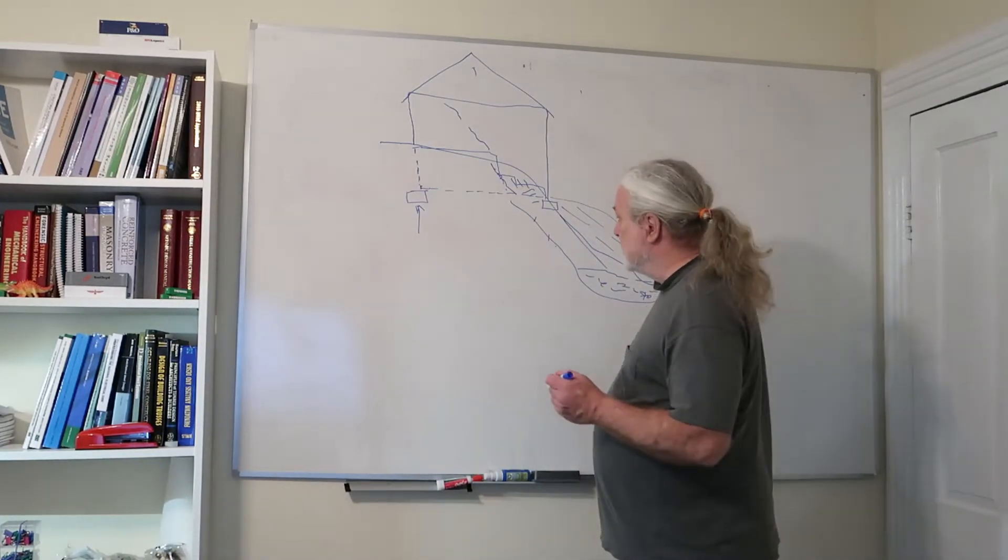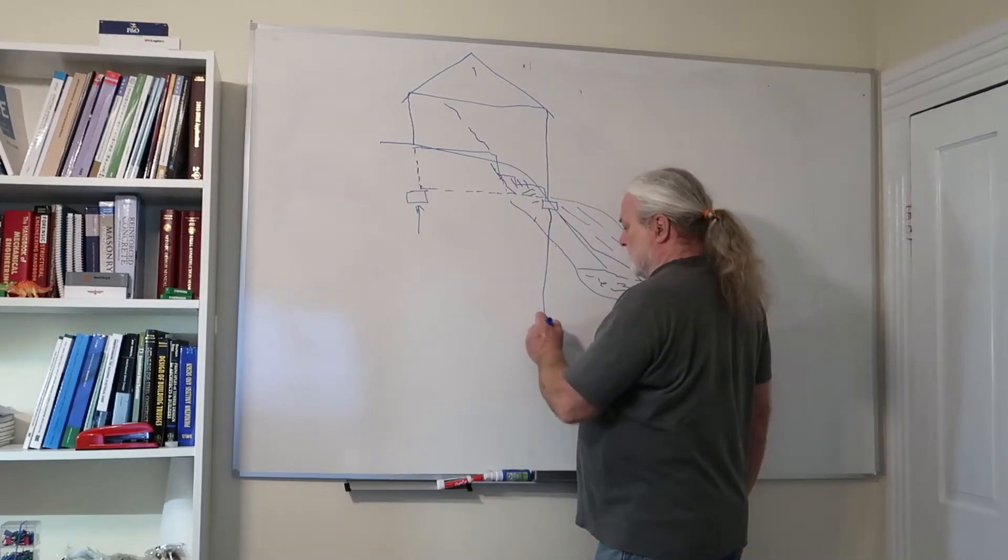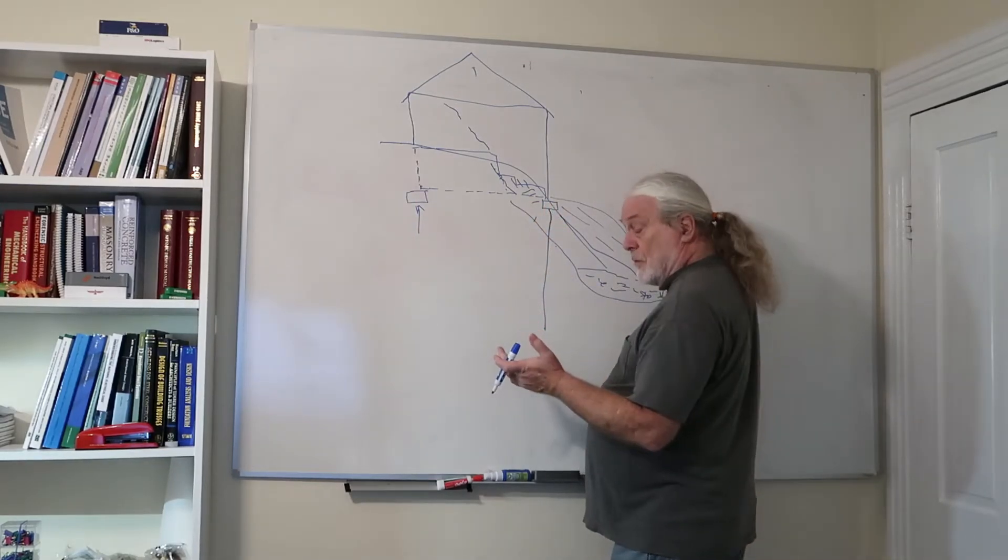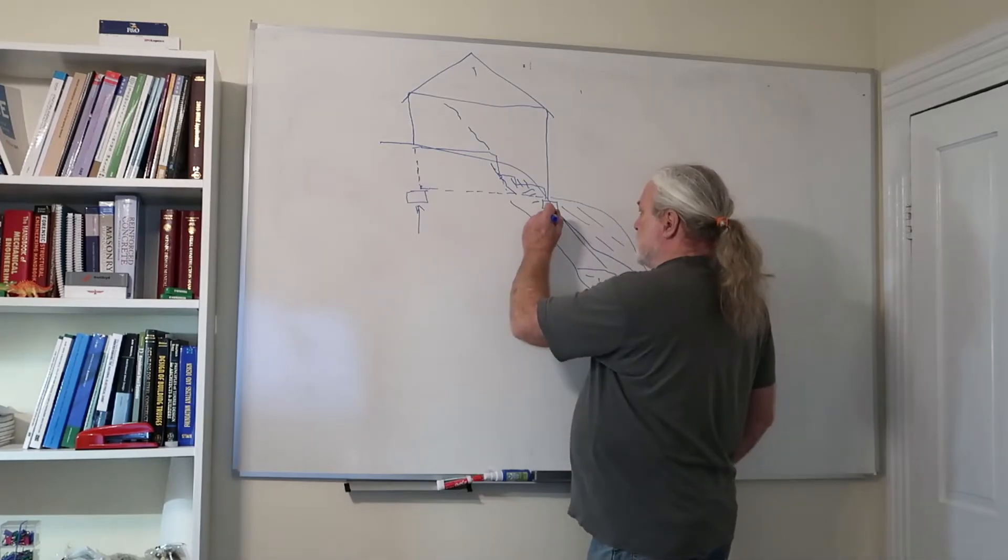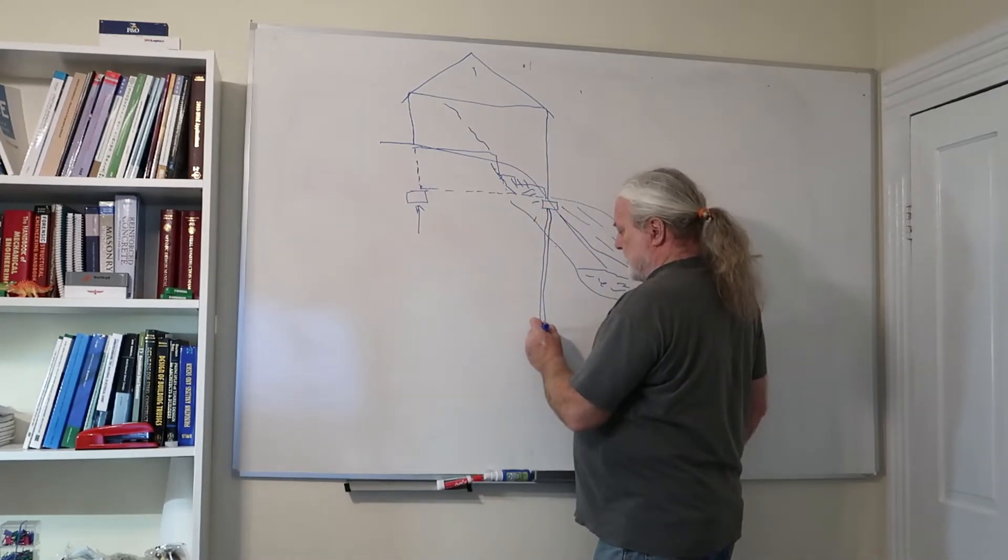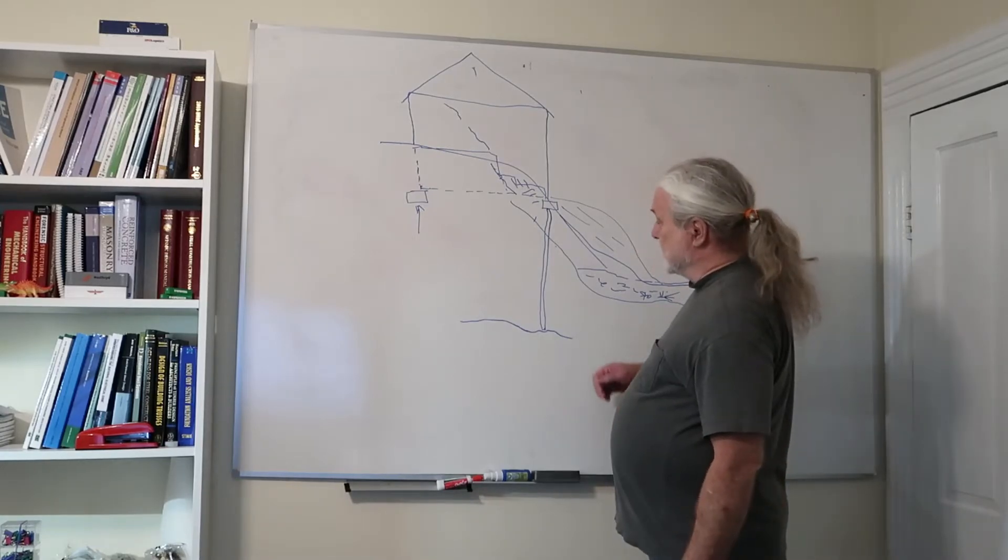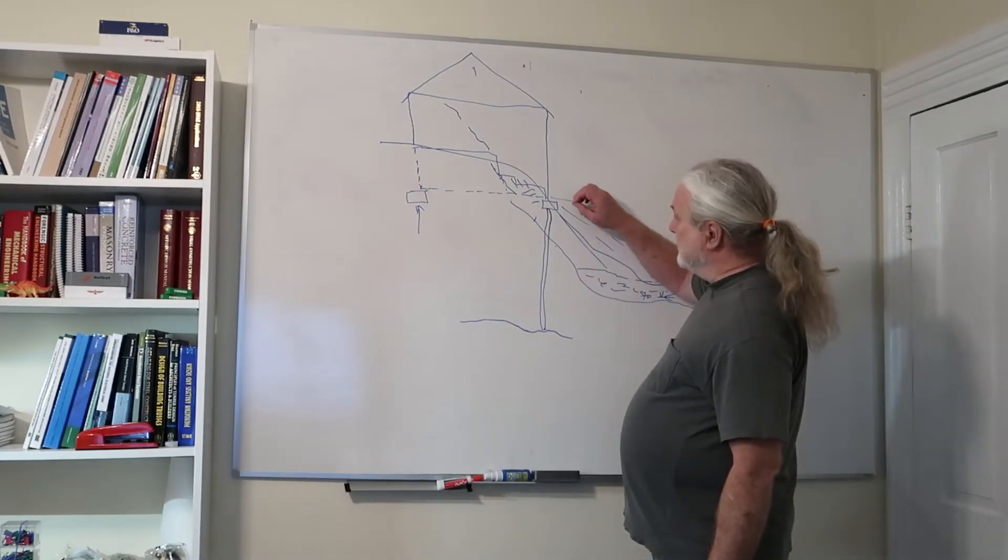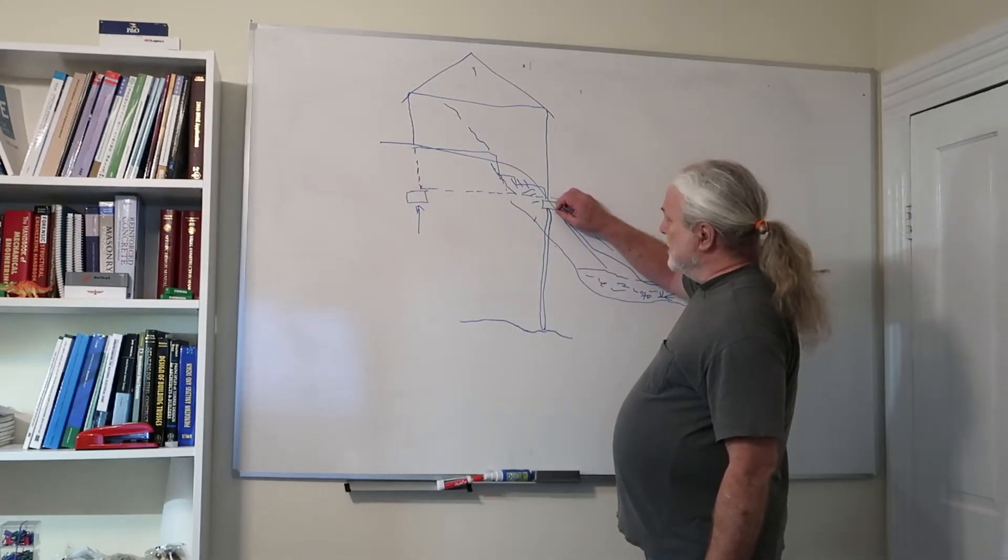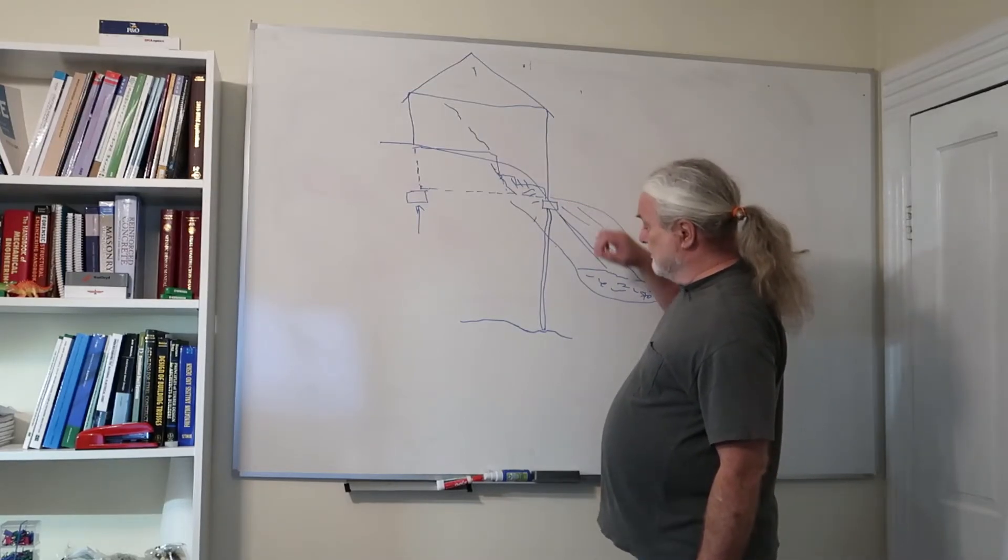So how do you fix this? Well, what you do is you put a pier down here. A pier can be one of two types. One type is we simply drive pipe down until it reaches hard ground underneath here. And that's called a resistance pier. And the beauty of a resistance pier is we can use that to lift this part of the house back up and fix it.